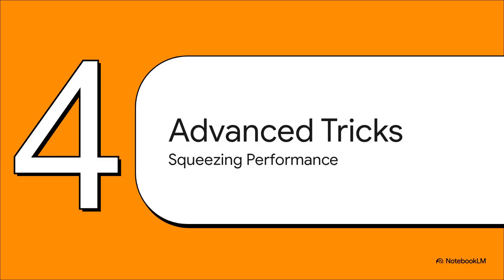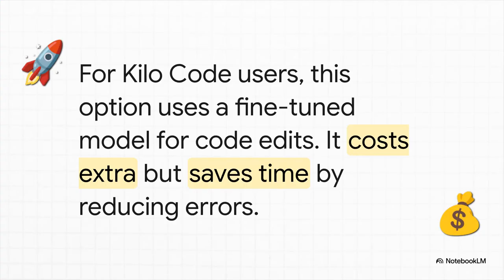Once you've got the basics down and you're in a good groove, there are a couple of advanced tricks you can use to push this thing even further. This is all about handling its biggest limitation and squeezing every last bit of performance out of it. Here's a pro tip for those of you using KeloCode: there's an option called Morph Fast Apply. It uses a totally separate, fine-tuned model just for applying the code edits. It costs a little bit extra — about a buck per million tokens — but it cuts down on errors so much that it saves you a ton of time. And as we all know, time is money.